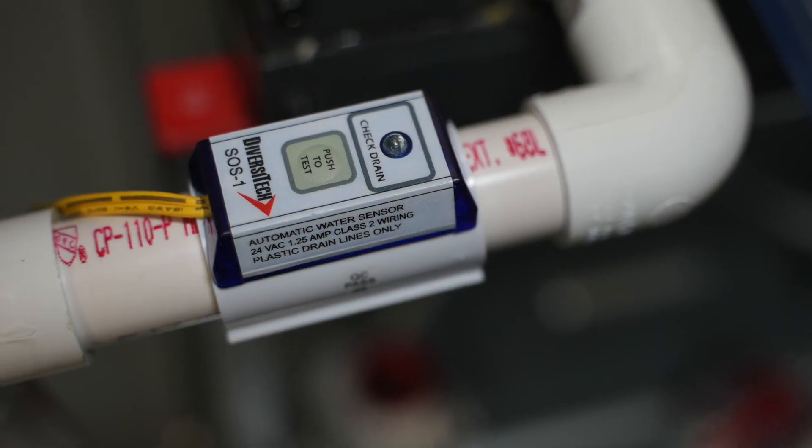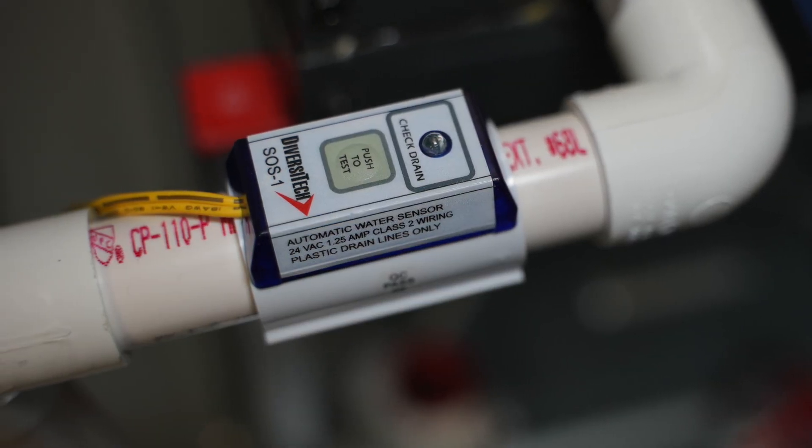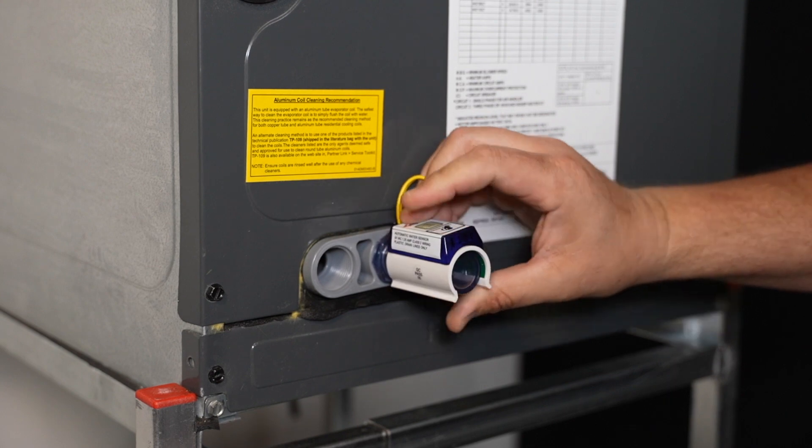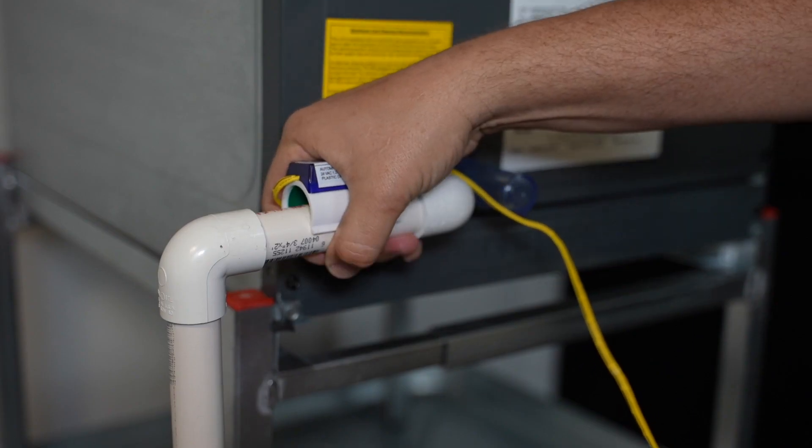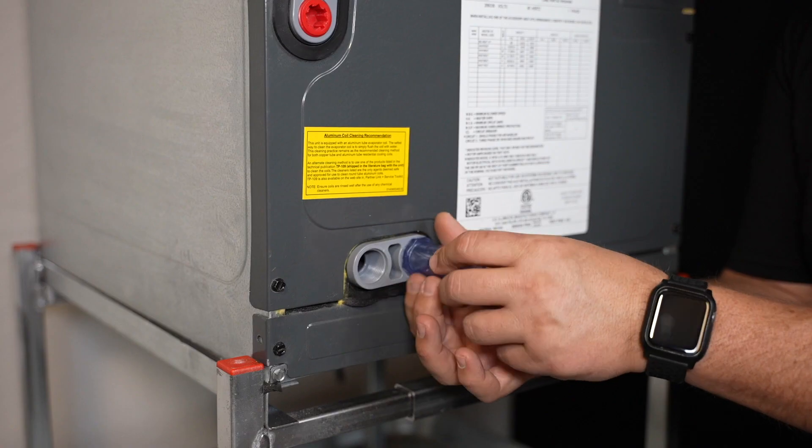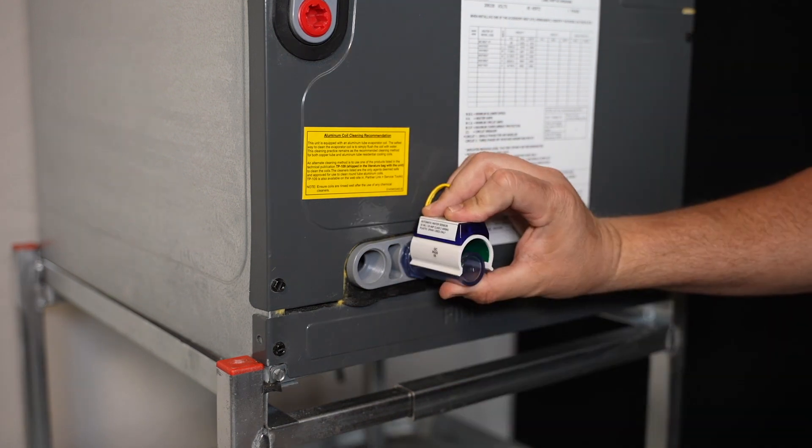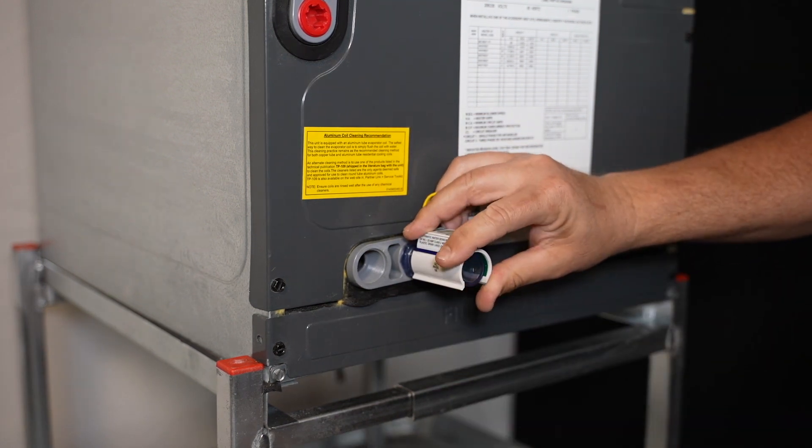The SOS1 condensate overflow switch is for the primary pan inline or the secondary port on the air handler. Its unique design fits over the three-quarter inch pipe without having to cut into the drain line. Its float-free design is ideal for drier environments.